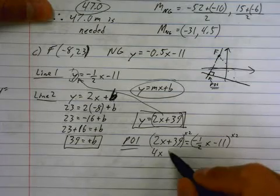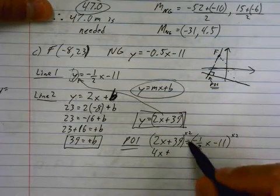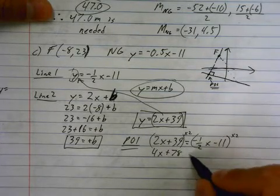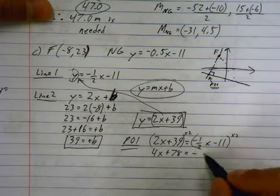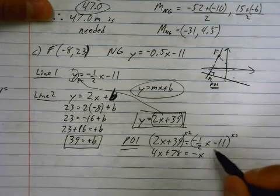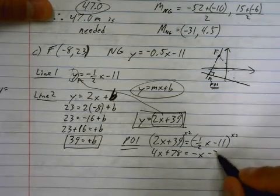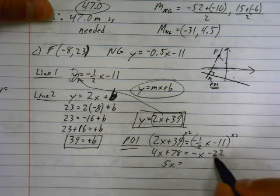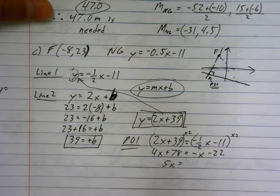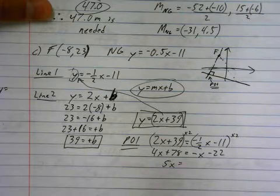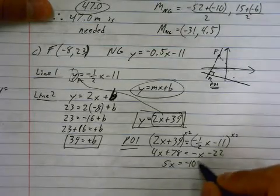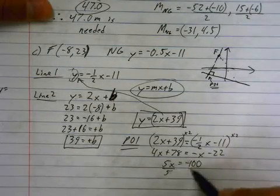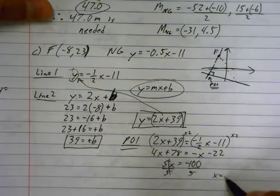So, this is going to go to 4x plus 78 equals negative x, because 2 times a half just takes the fraction away, minus 22. Okay, bring the x over here, and we get 5x's, negative 22 minus another 78, goes to negative 100 exactly, and divide off the 5, and x equals negative 20.